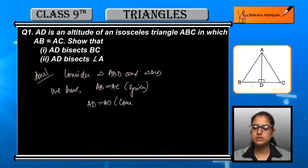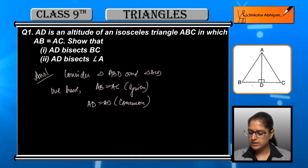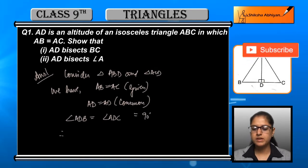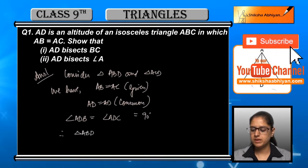Next we have AD is equal to AD, it is common in both the triangles. And ultimately, angle ADB is equal to angle ADC.